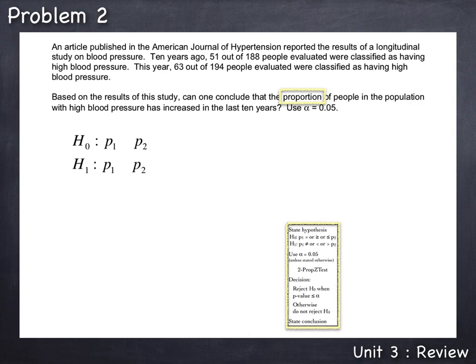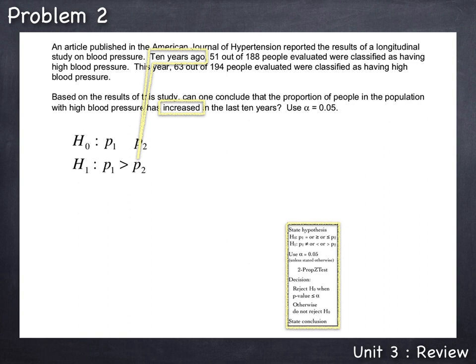The question helps determine the direction. We're looking at whether the proportion of people with high blood pressure has increased in the last 10 years. If you look at 'increase' as a greater than, greater than is always placed in H1. We have to set up the first and second populations in the right order. So if we're looking at increase as P1 greater than P2, that means the first population has to be the population of people from this year, because the proportion has to be greater now than it was 10 years ago. So this year is P1 and 10 years ago is P2.